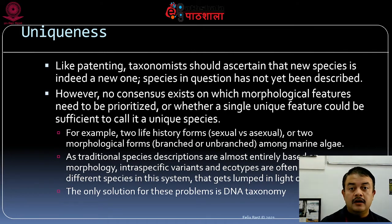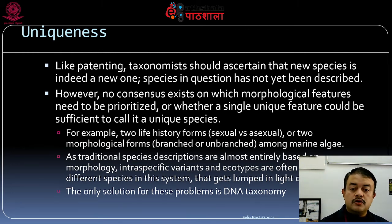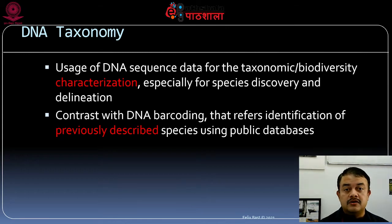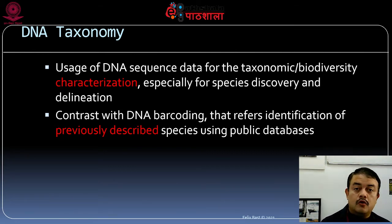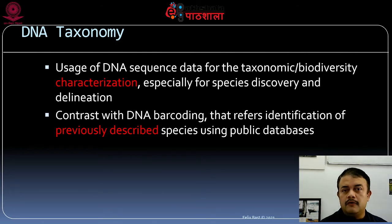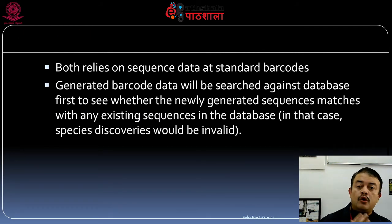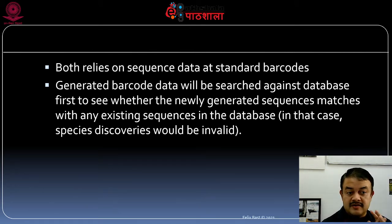The solution is DNA taxonomy: the use of DNA sequence data for taxonomic or biodiversity characterization, especially for species discovery and delineation — determining how a species differs from closely related species. This contrasts with DNA barcoding, which means identifying previously described species using a public database. Barcoding is for identification of known species; taxonomy is for describing new species. Both rely on sequence data. Generated barcode data is searched against a standard database first to see whether the newly generated sequences match any existing accession.